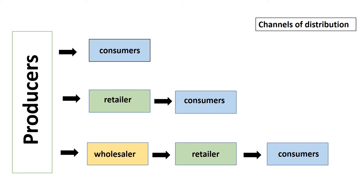A distribution channel represents a chain of businesses or intermediaries through which the final buyer purchases a good or service. There are three distribution channels. The first is the producer selling directly to the consumers — that's a direct method. Second, the producer sells to the retailers and then the retailers sell to the consumers — that's the modern method. Finally, the traditional method is where producers sell to wholesalers, wholesalers sell to retailers, and retailers sell to consumers. It should be noted that more than one distribution channel can be chosen, and many producers do this.